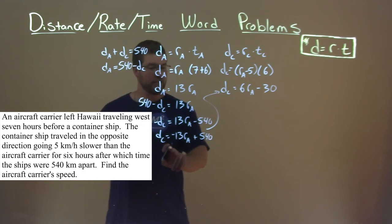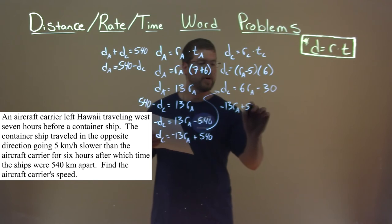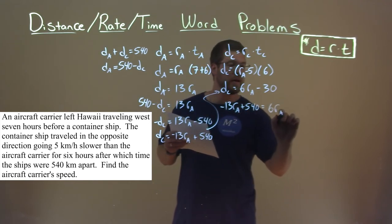Now this becomes helpful because we can use that for this D sub C. D sub C is equal to negative 13 R sub A plus 540 equals the 6 R sub A minus 30.